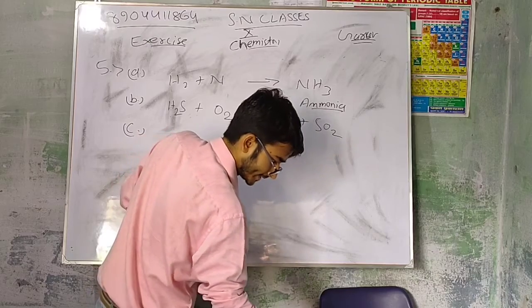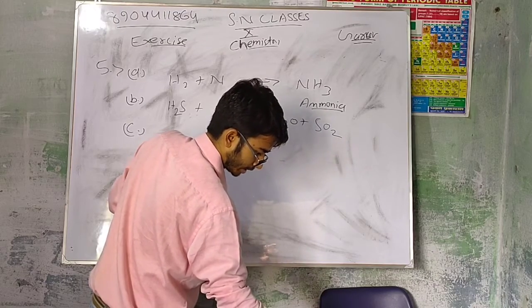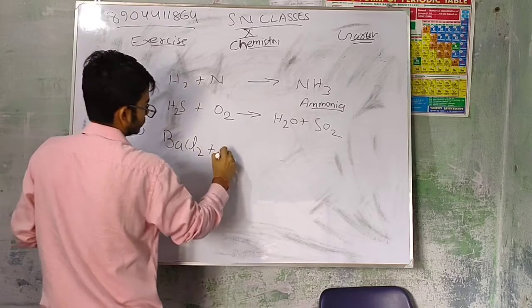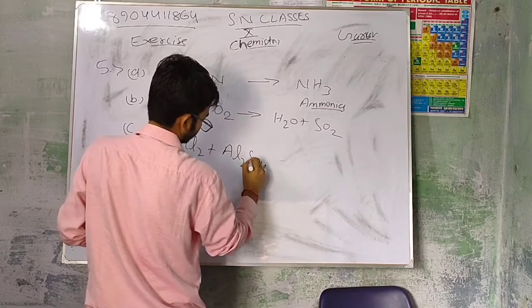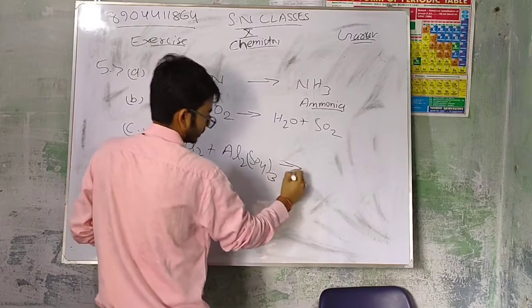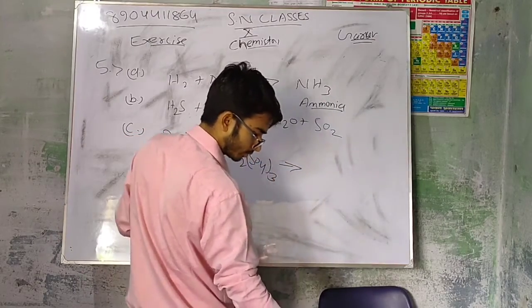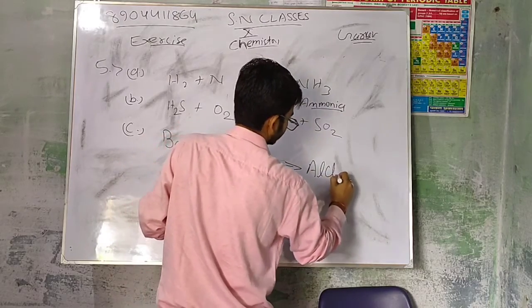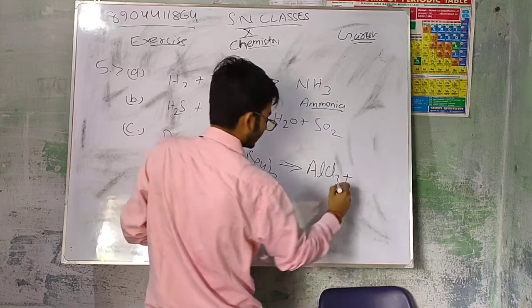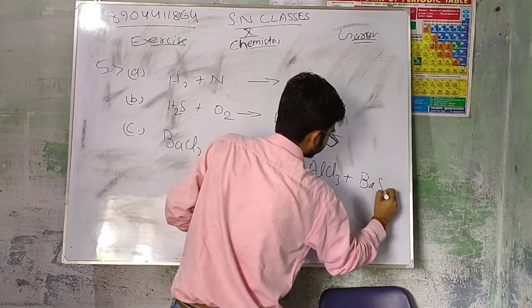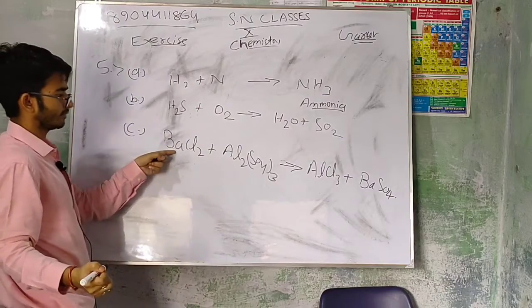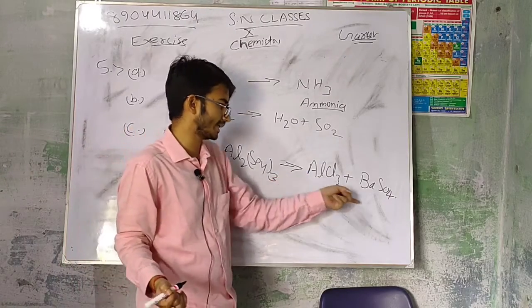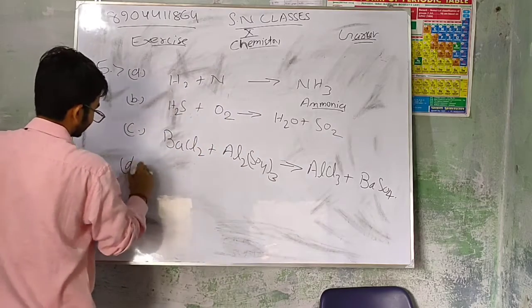Question number 3: Barium chloride reacts with ammonium sulfate Al2(SO4)3 to give ammonium chloride and precipitation of barium sulfate. Barium chloride in the presence of ammonium sulfate gives ammonium chloride and BaSO4.